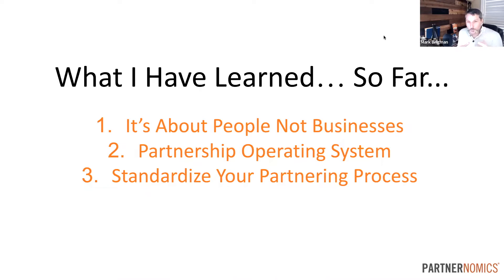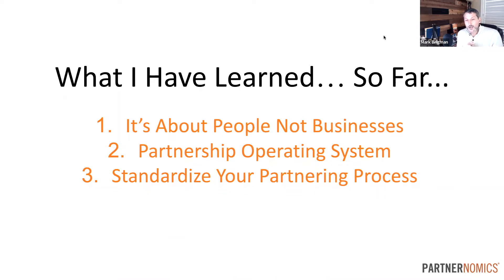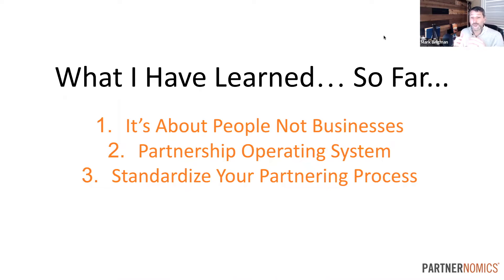What we went through last week is really a partner operating system — the SPLM, Strategic Partner Leadership Model — an operating model of how we can operationalize the partnering function. At Partneromics, we believe there are really two core processes for partnering: the partnering operating system, and the five-phase partnering process — how we go from idea all the way down to signed, executed agreements that we're ready to operationalize.